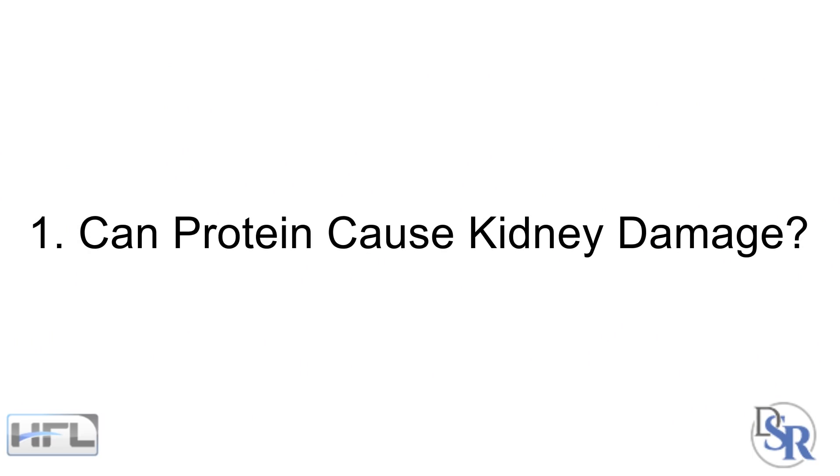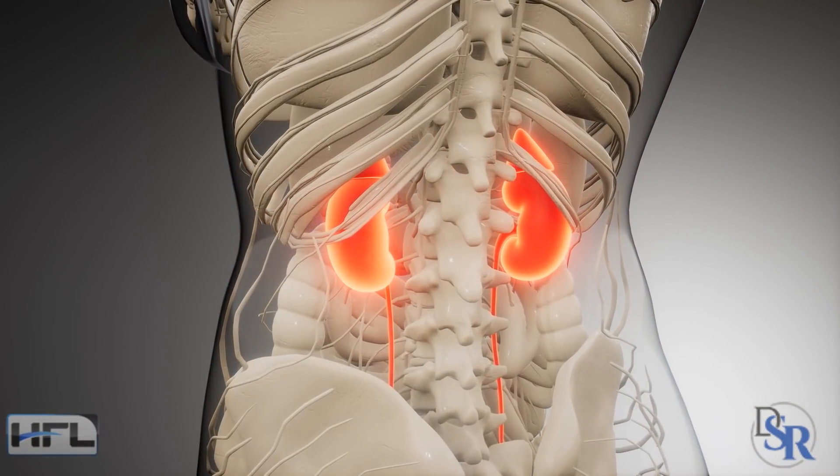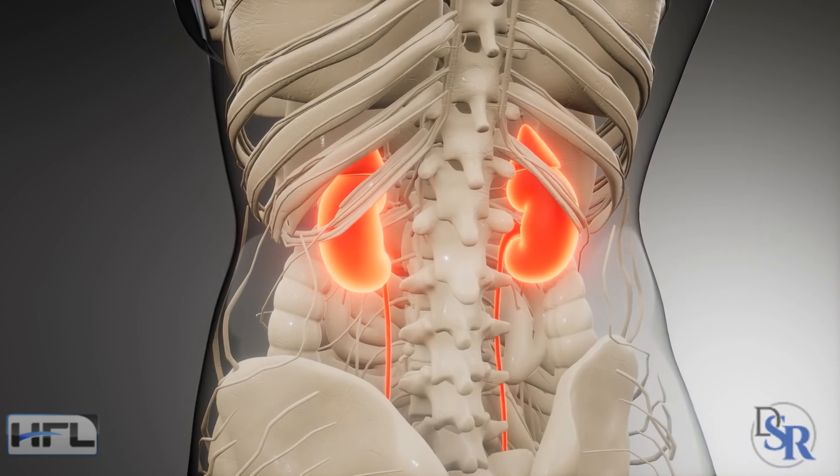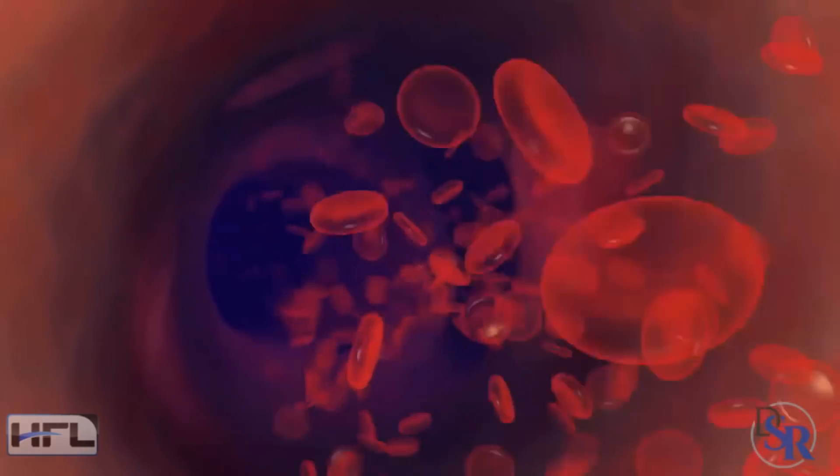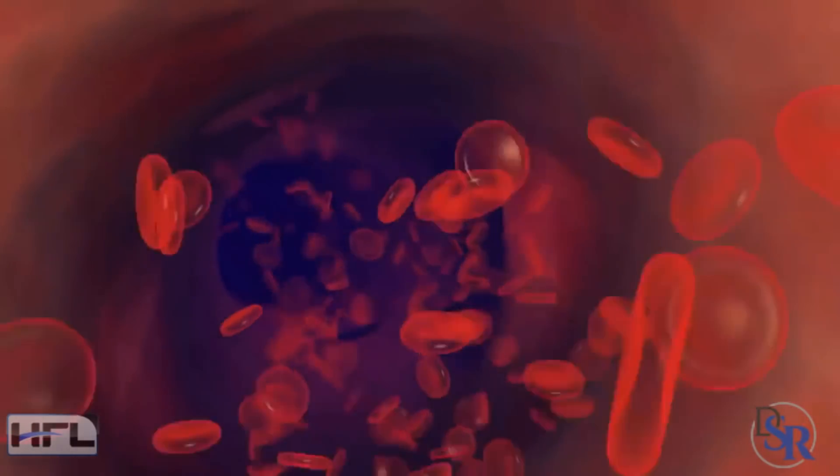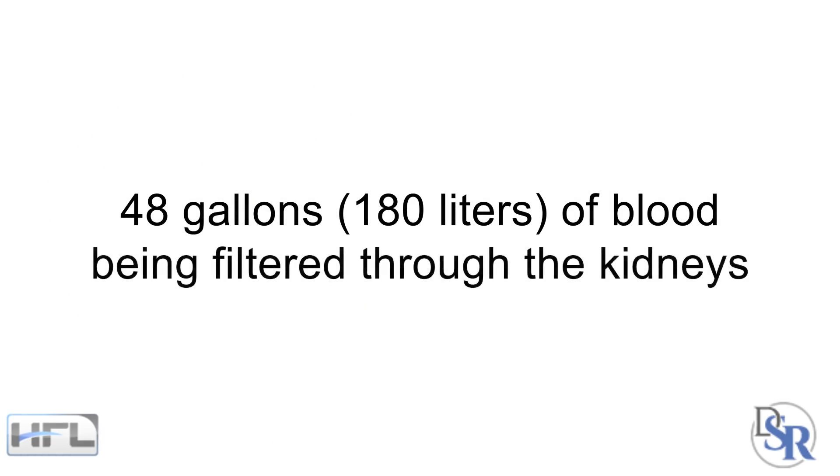So let's get started with the very first question, can protein cause kidney damage? The kidneys are remarkable organs that filter waste compounds, excess nutrients and liquids out of the bloodstream, producing urine. And about 20% of the blood your heart pumps through your body goes to the kidneys, which is about 48 gallons of blood being filtered throughout the kidneys every single day.